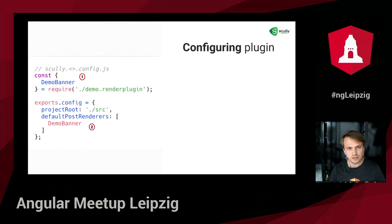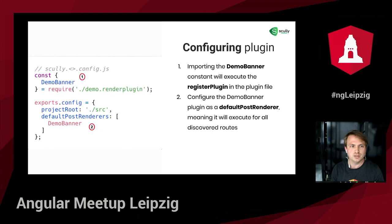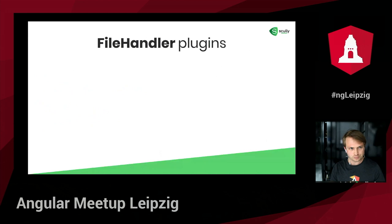Configuring this render plugin is very similar to configuring a router plugin — we first import the identifier, which also executes the `registerPlugin` call. We configure the demo banner identifier as a default post-renderer, meaning it will execute for all discovered routes. This simple plugin requires no extra configuration. Our render plugin is now configured and usable — we'll see it in action in the demo.